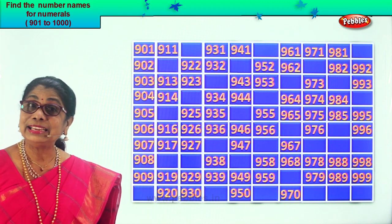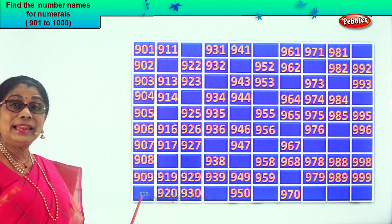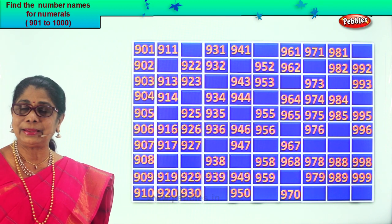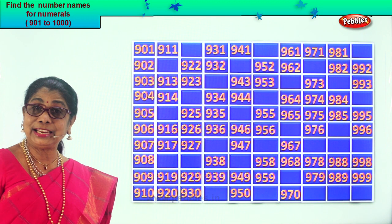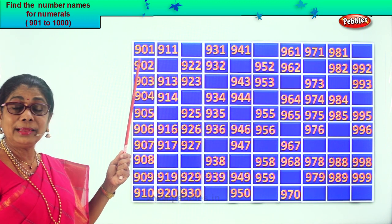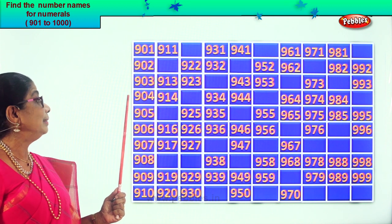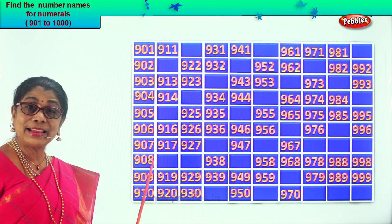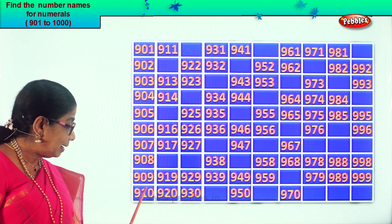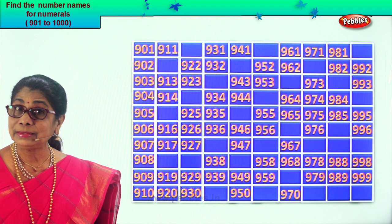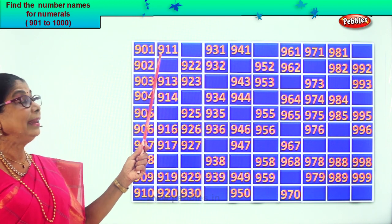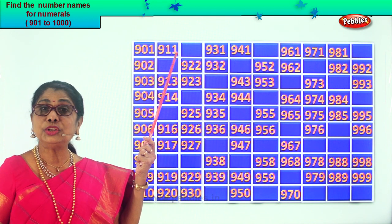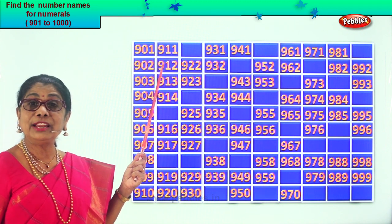After nine, ten. So we get the missing number 910. After ten, eleven. So we get nine hundred eleven. What comes after eleven? Twelve. So we get nine hundred twelve.